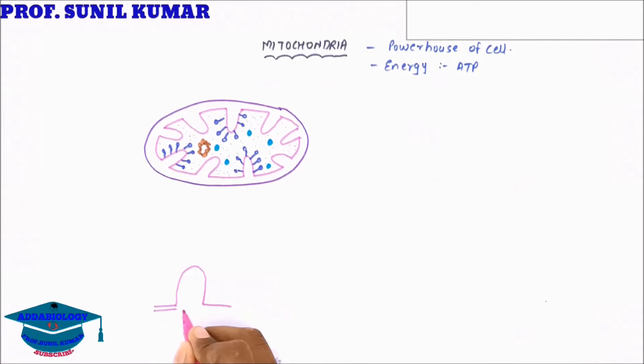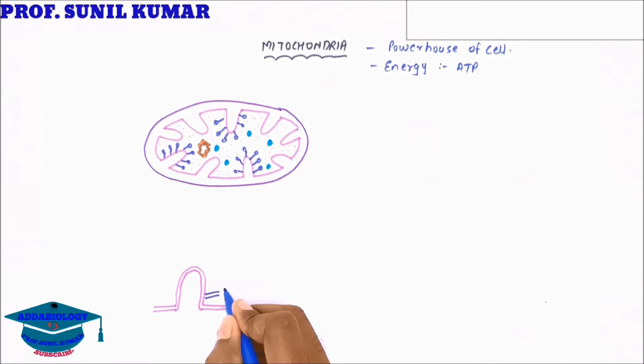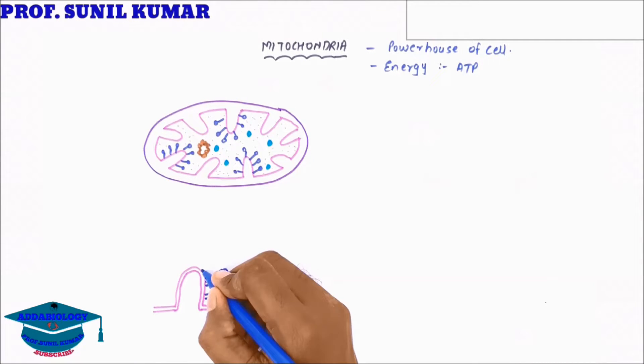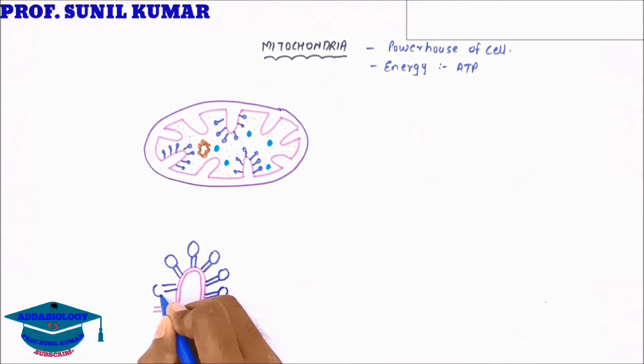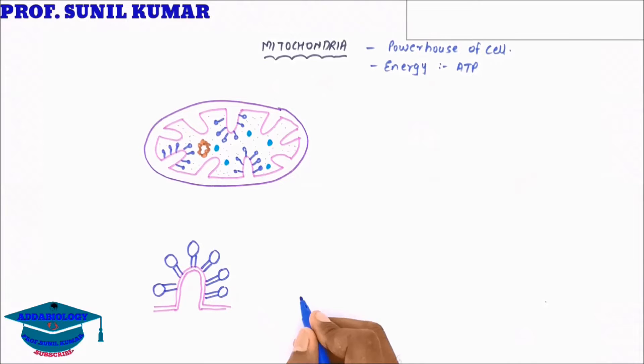This folded finger-like structure is called Cristae, and on the Cristae we are going to draw the F1 particles. When we focus on a single F1 particle, we need to understand that it is somewhat like this. Let's explore the structure of mitochondria in detail.